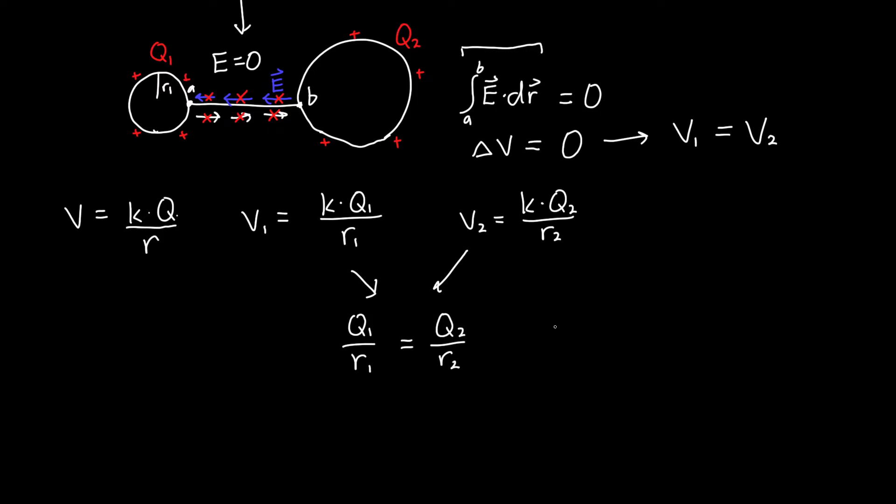This is certainly progress, but we still have our answer in terms of both Q1 and Q2. We'd like it in terms of the things we were given in this problem. We were given Q, our starting charge on one of the spheres, and R1 and R2. Is there any way we can use our initial charge in solving this problem?